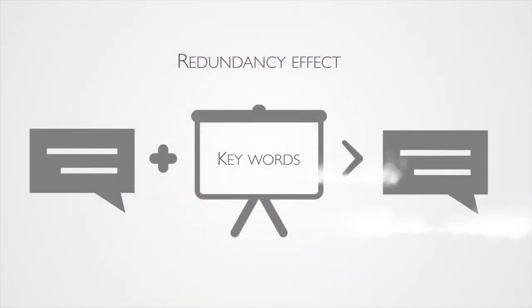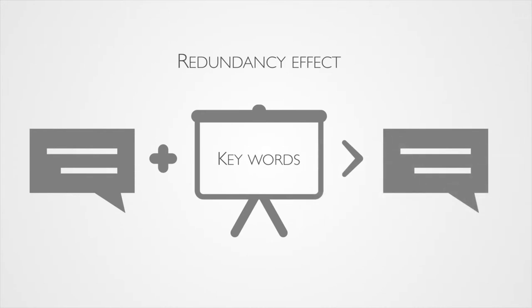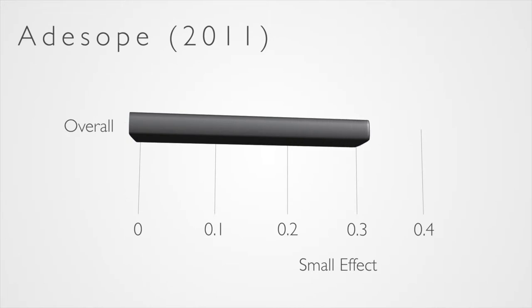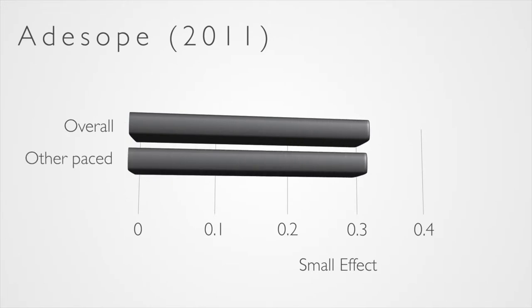One easy way to do this is to put some minimal key points on the slides. Most lecturers already do this and it's called the redundancy effect — where we learn better from spoken information when it's also accompanied by written information. A meta-analysis of 57 studies found that doing so has a small positive effect on learning, particularly in the classroom where learners aren't in control of the pacing.